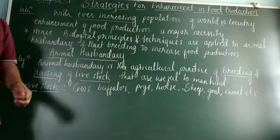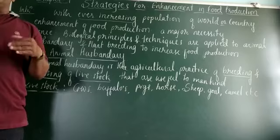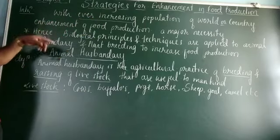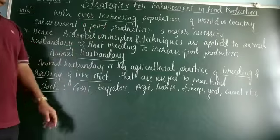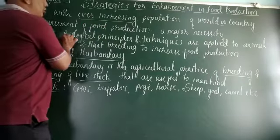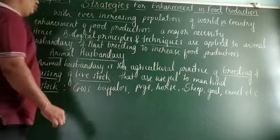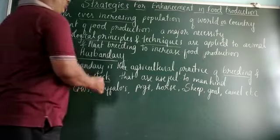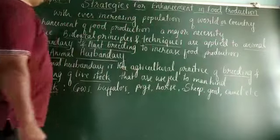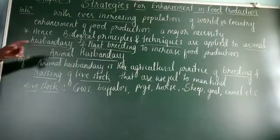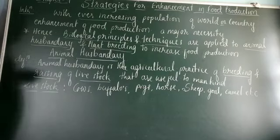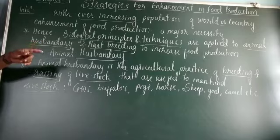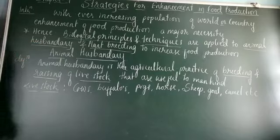With ever-increasing population of the world, enhancement of food production is a major necessity. Biological principles and techniques are applied to animal husbandry and plant breeding to increase food production. Animal husbandry is the agricultural practice of breeding and raising of livestock — cows, buffalo, pig, horse, sheep, goat, camel, etc. — useful to mankind.